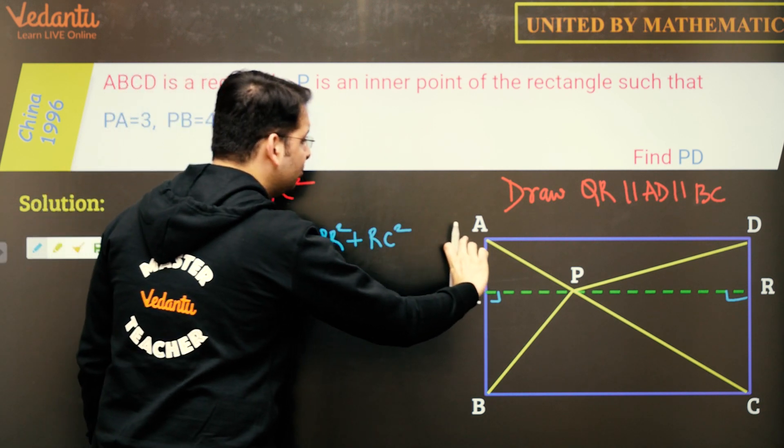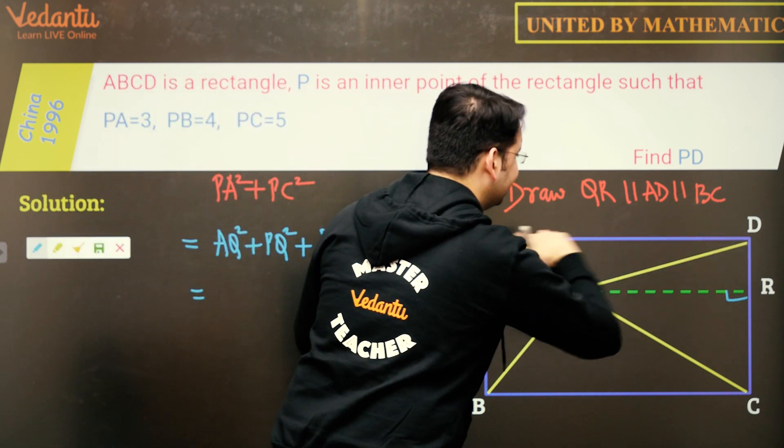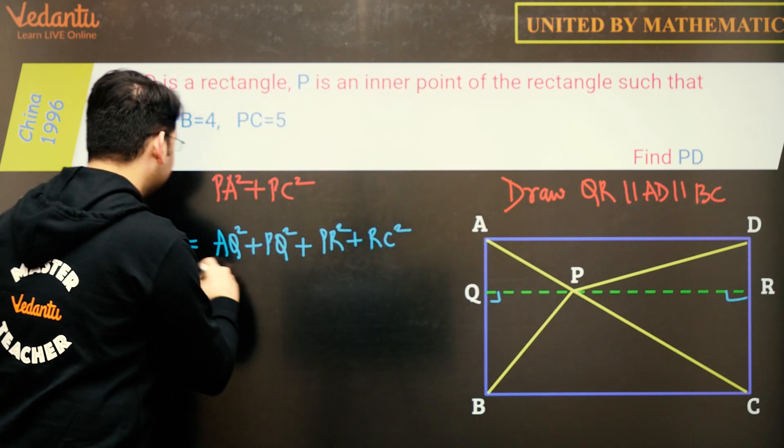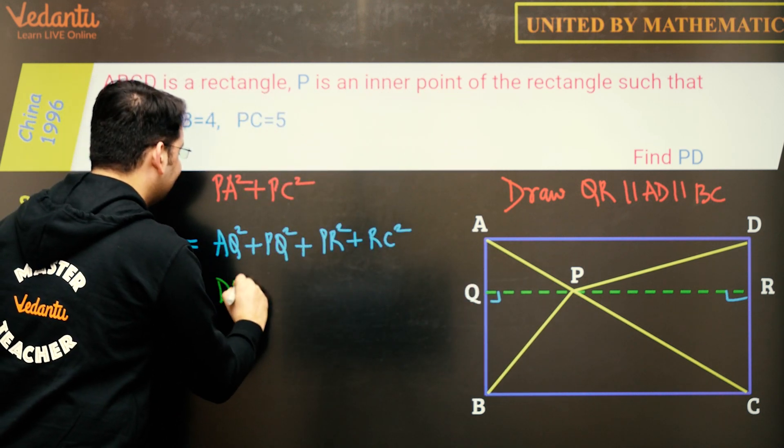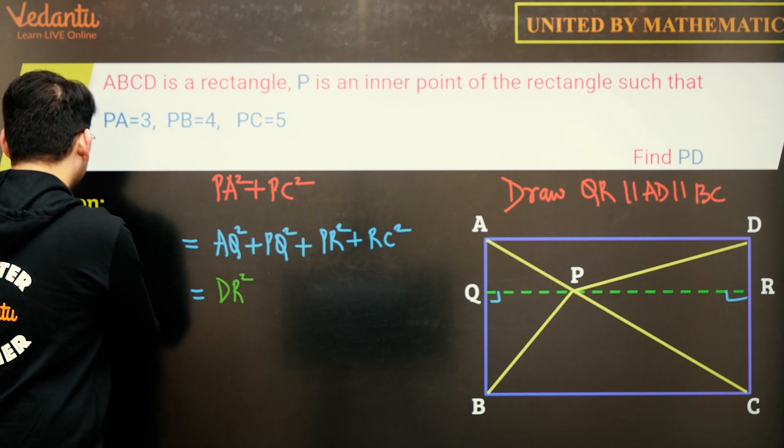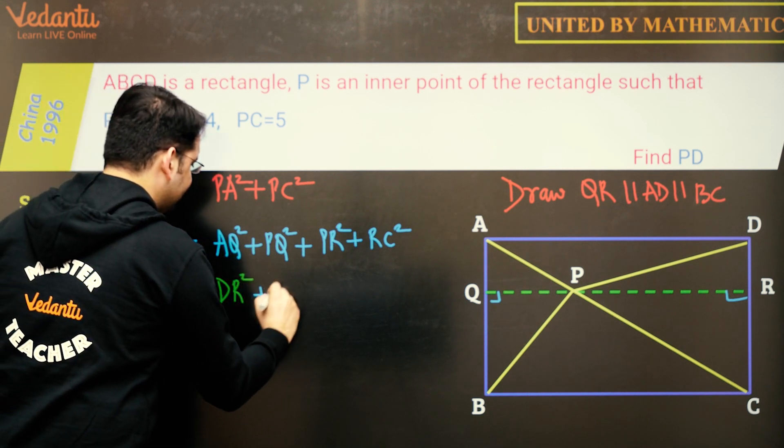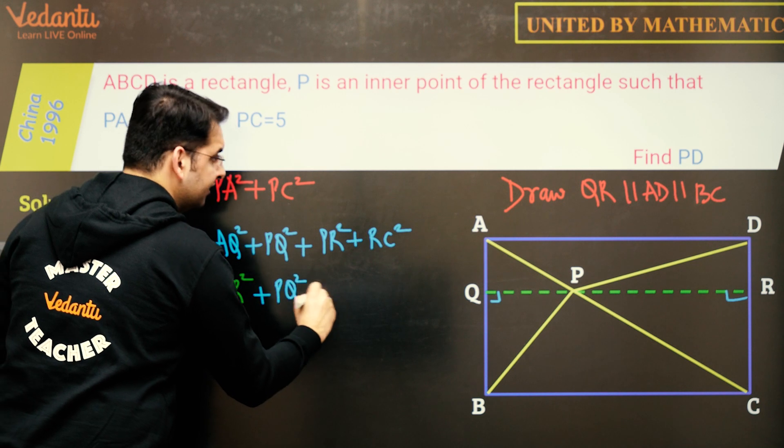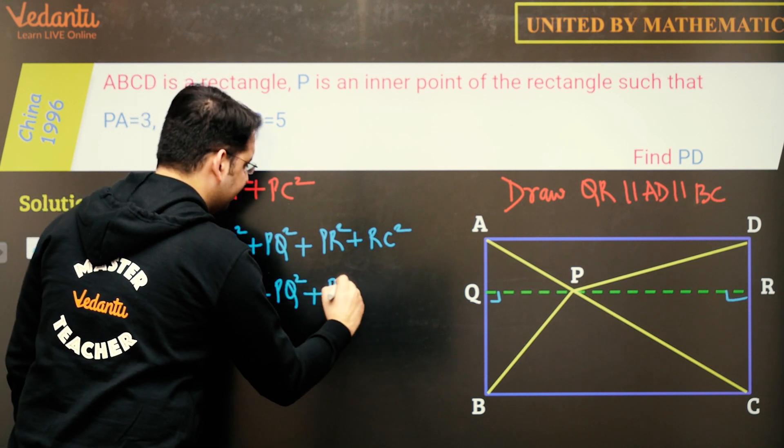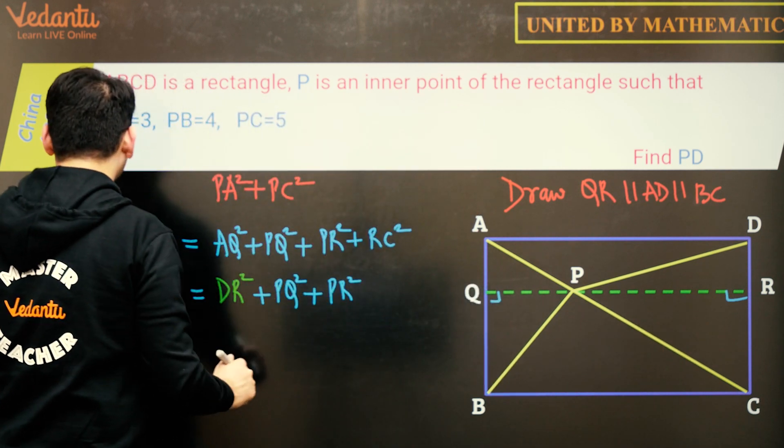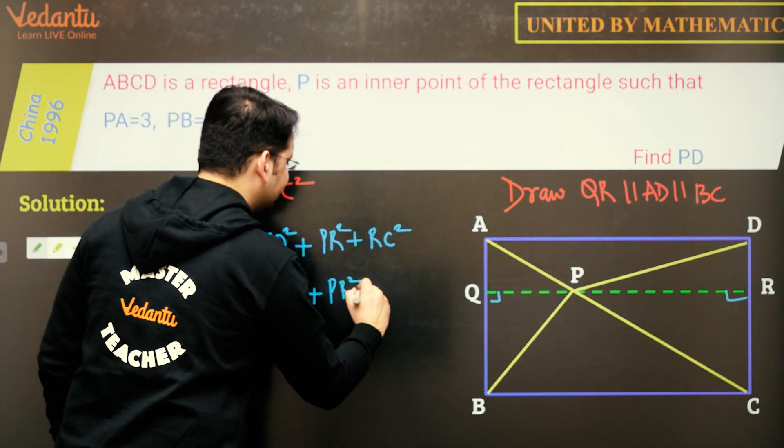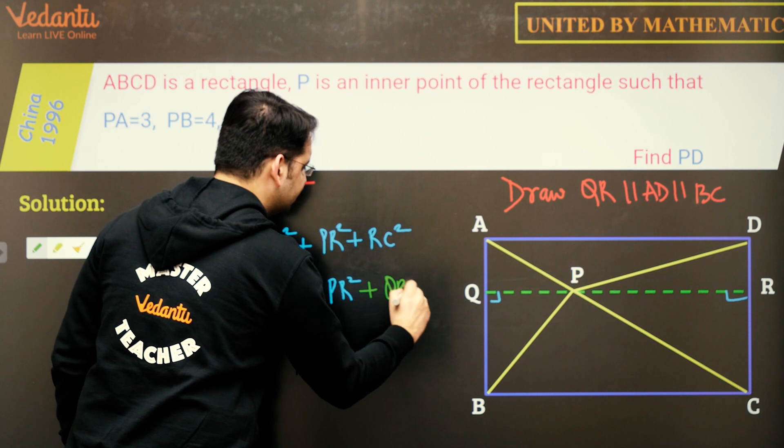And now AQ is same as DR because this is a rectangle as well. So we'll replace AQ by DR. So this is DR square plus PQ square plus PR square. And again we'll replace RC by QB because this again is a rectangle. So this will be plus QB square.